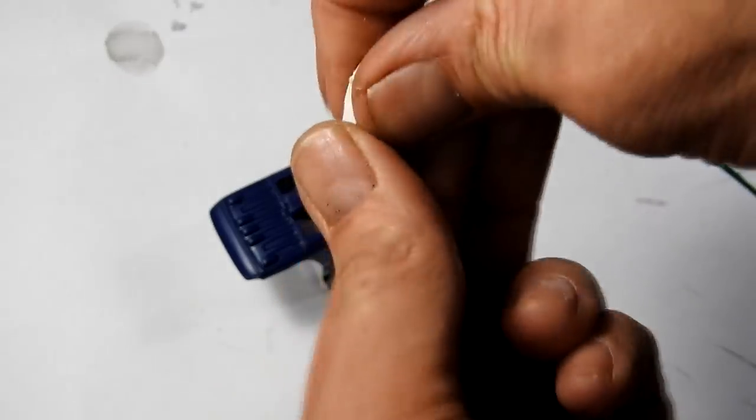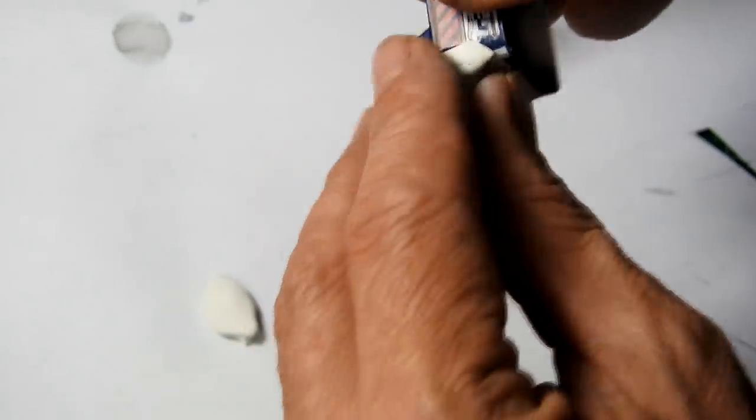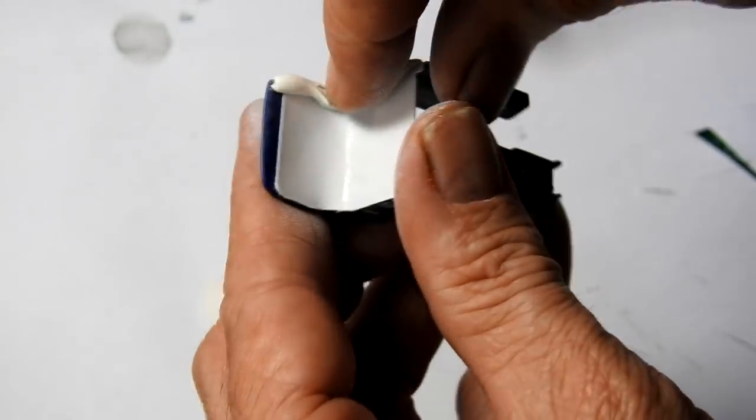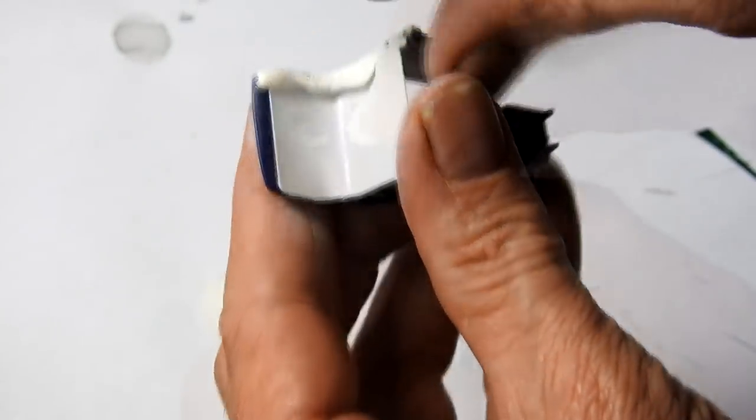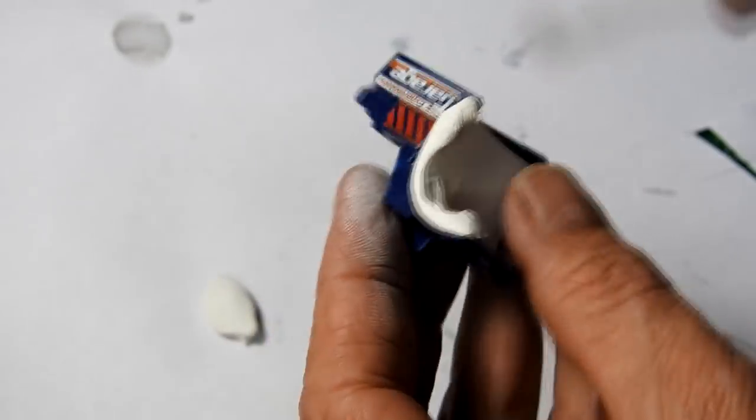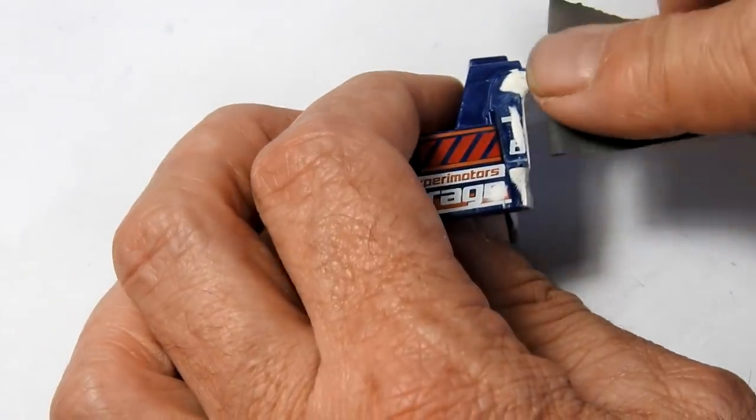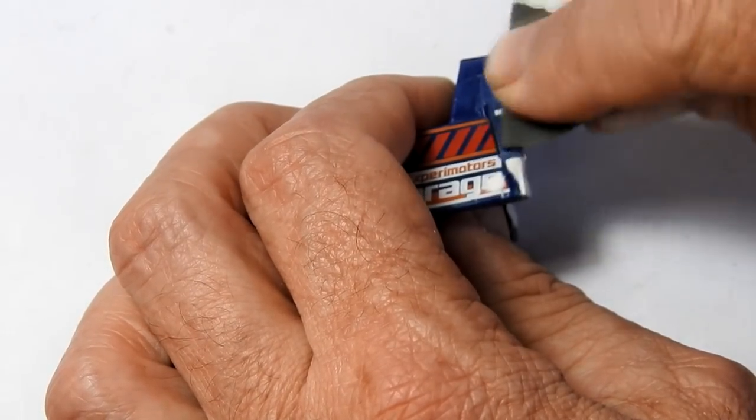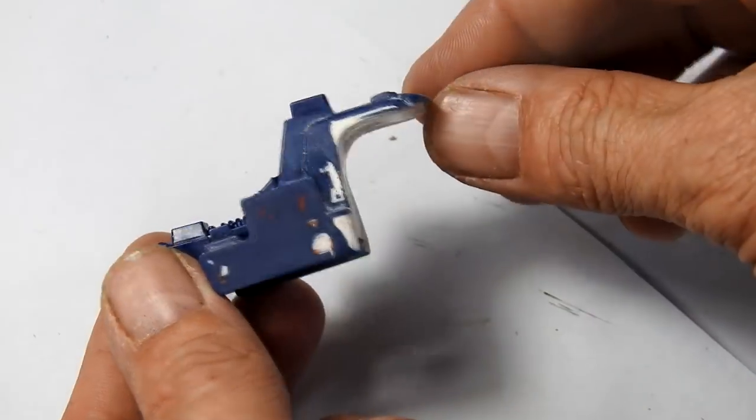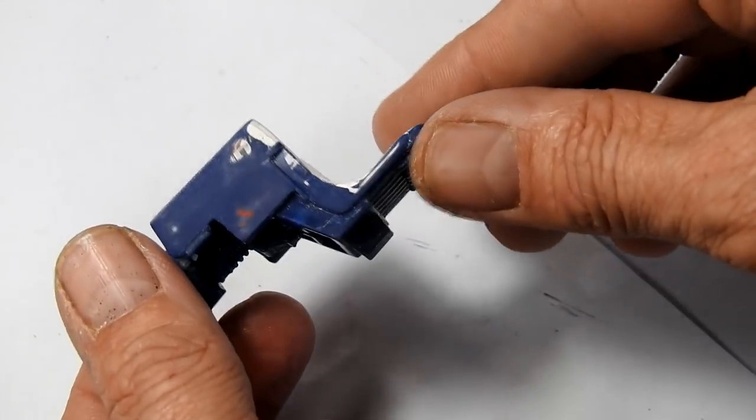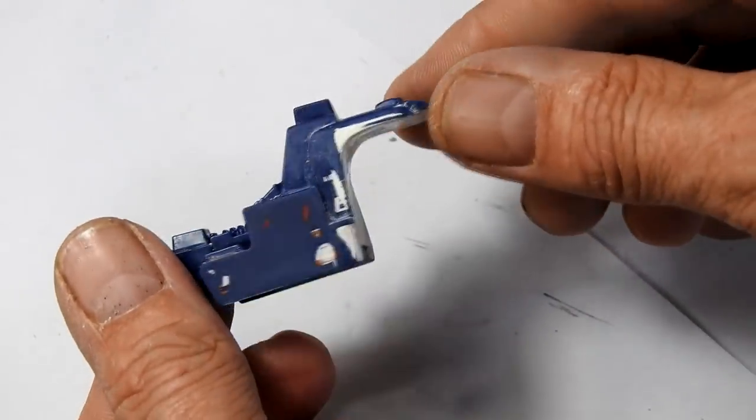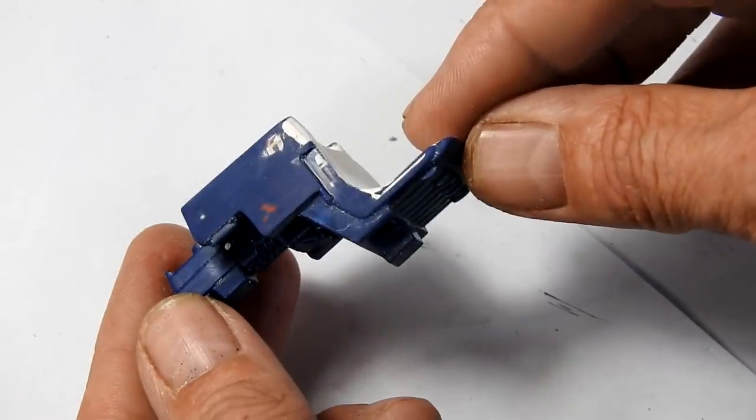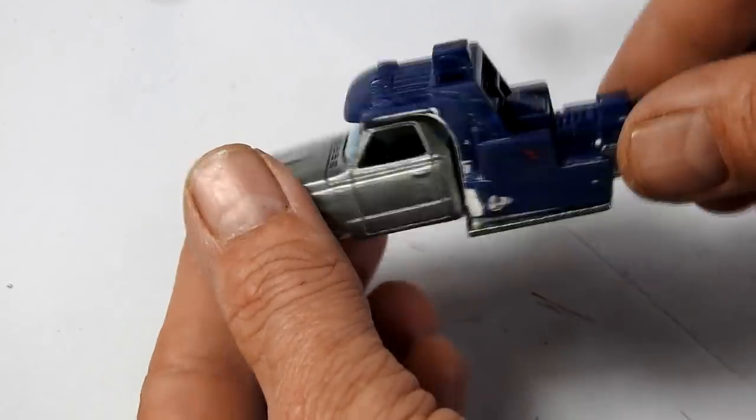I'm just going to use a little bit of milliput to fill the little gaps in the sides there. So once this has dried I can sand it down so it's a bit smoother. It's going to be a pretty rusty beater of a tow truck so I'm not too worried about everything looking super tidy.